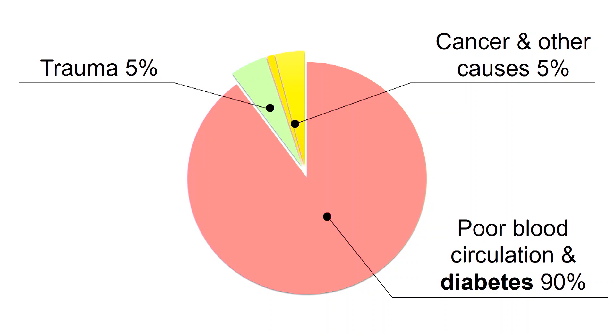Type 2 diabetes. Everything is related to smoking, poor diet, and lack of movement — these can bring a person to amputation.